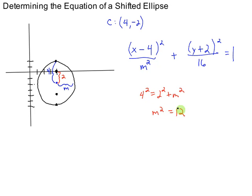Now we go back, we replace m squared, because that's all we need, with 12. And now we have the full equation of this shifted ellipse.